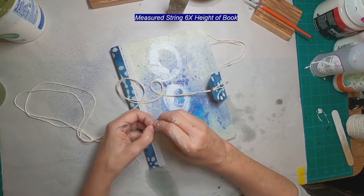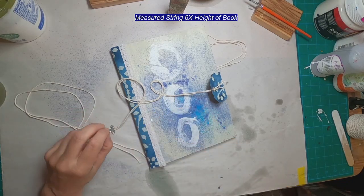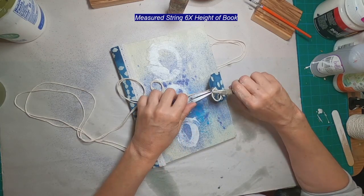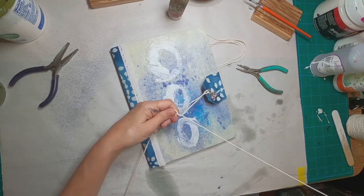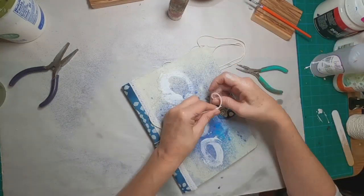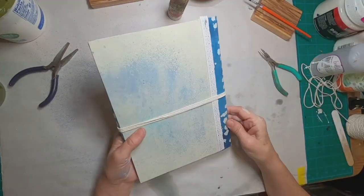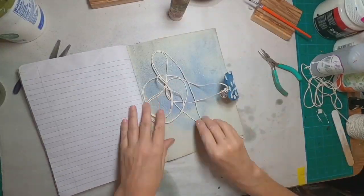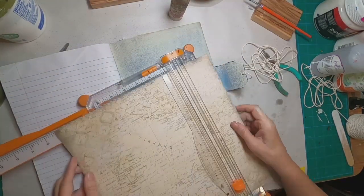It is time to put the string in. I measured that string six times the height of the book to give it enough to wrap around a couple of times. I've pulled it through, doubled it in half, pulled it through that eyelet, and pulled the little loop through. I put the little trinket or charm onto that loop when it was through. Now I've pulled that tight, tied it to hold it in place, and now you can wrap it and tie that book off.